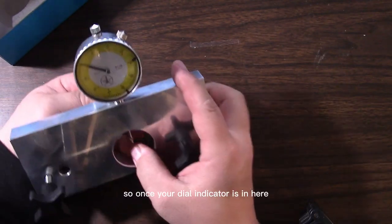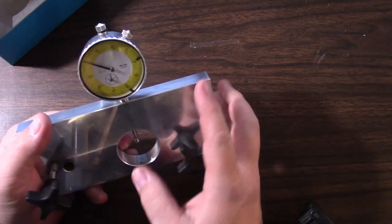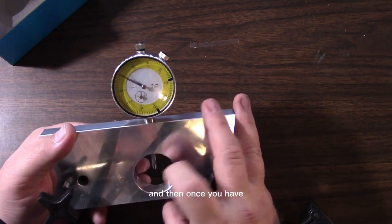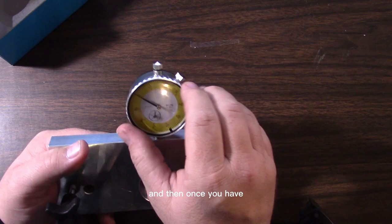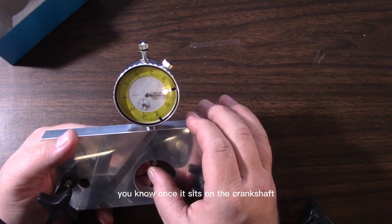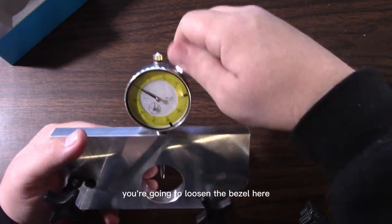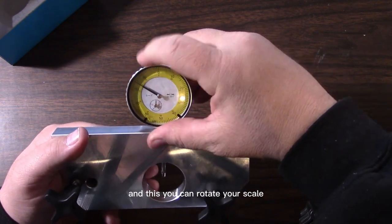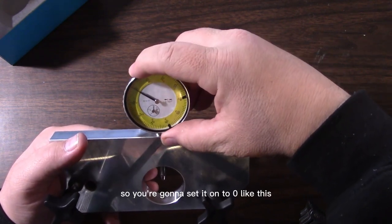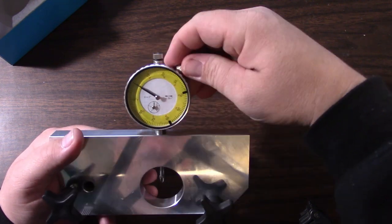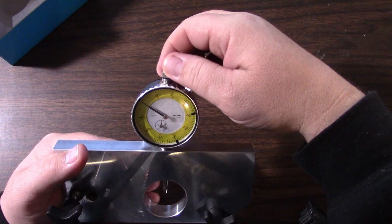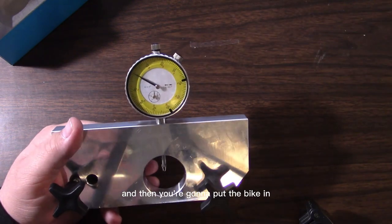Then you're going to take your dial indicator, stick it in this hole here, and you're going to tighten it down. It's real easy, just reach your finger in there, tighten it down, you're good to go. Once your dial indicator is in here, you want it to sit on the crankshaft. Once it sits on the crankshaft, you're going to loosen the bezel here.